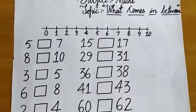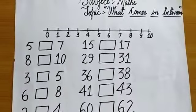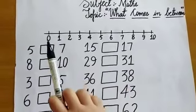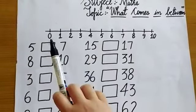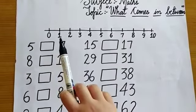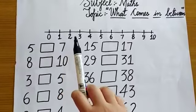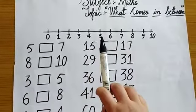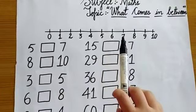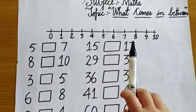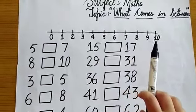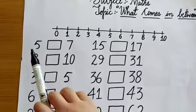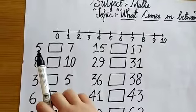Now back to the topic. See kids, we have a number line here. Start counting: 0, 1, 2, 3, 4, 5, 6, 7, 8, 9, 10. Now look here kids, which number is this? 5.